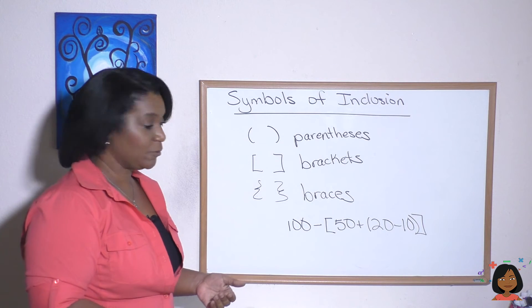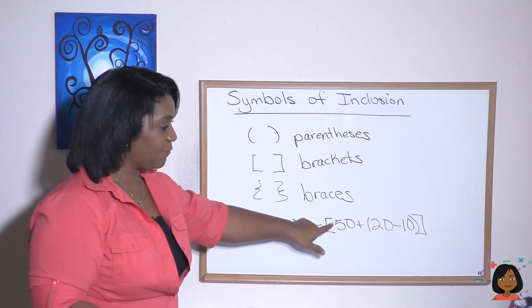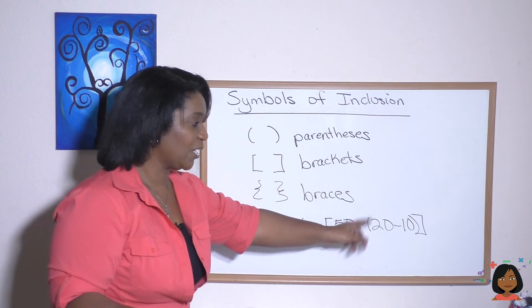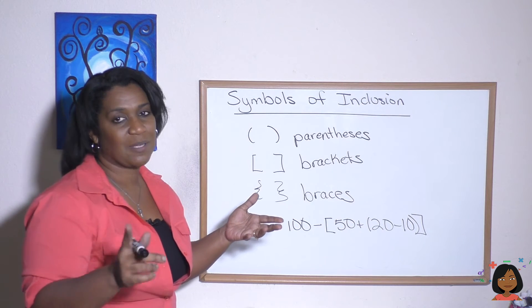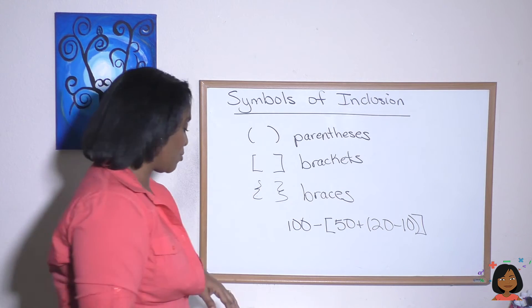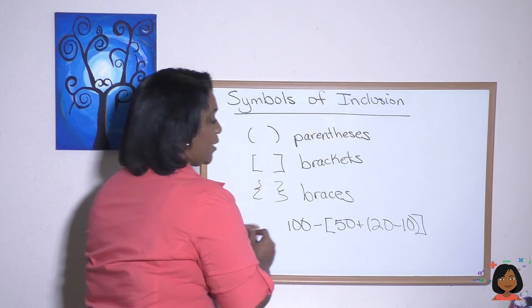Let's take a look at this problem here: 100 minus a bracket, 50 plus parentheses 20 minus 10. Without rules we wouldn't know where to start, but the rule is start with the innermost, which is the 20 and the 10.